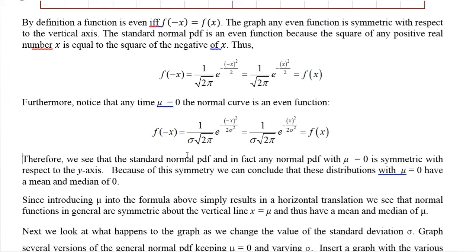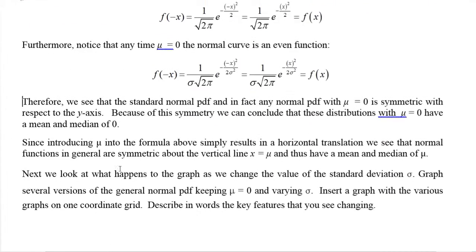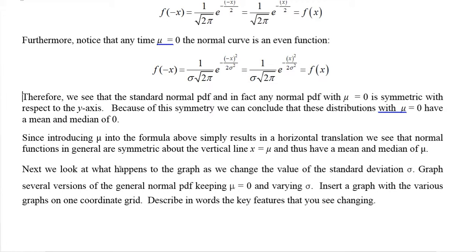Because all normal PDFs are horizontal shifts of that, any normal PDF curve has symmetry about the vertical line x = μ — that is, x equals the mean. This means the distribution's mean is also the median, since half the area under the curve is to the left and half to the right of that point. The maximum occurs at the symmetry point, making it the mode as well. So for the normal distribution, the mean, median, and mode all coincide at μ.